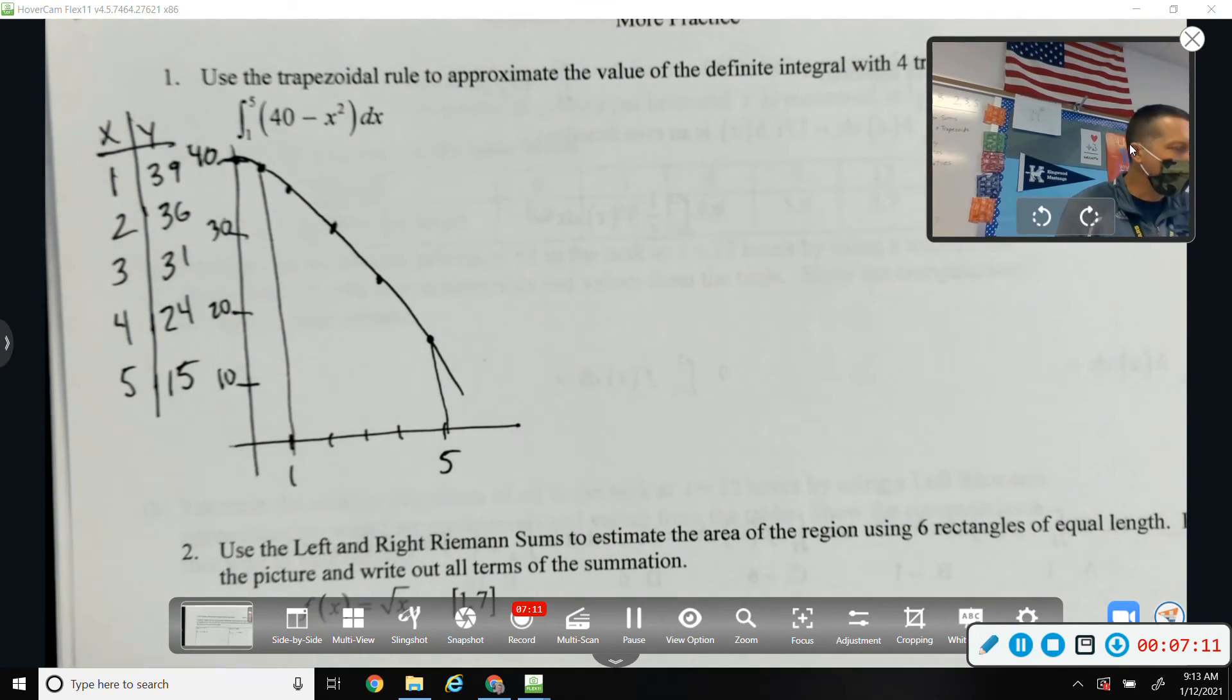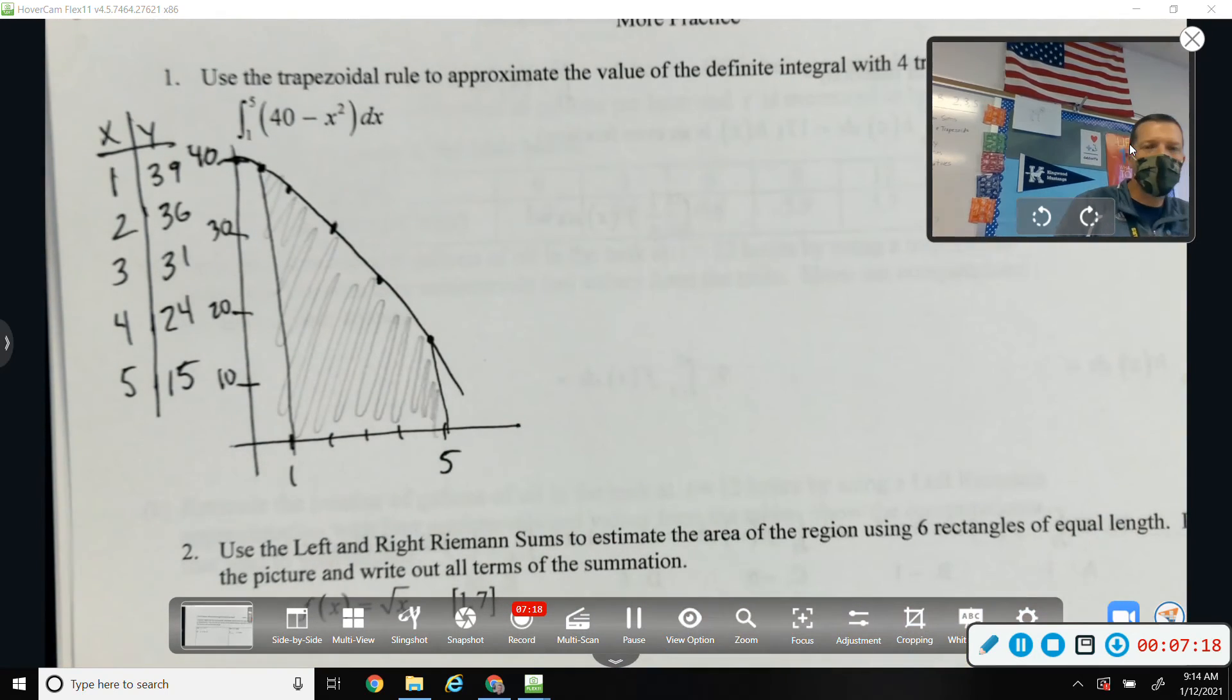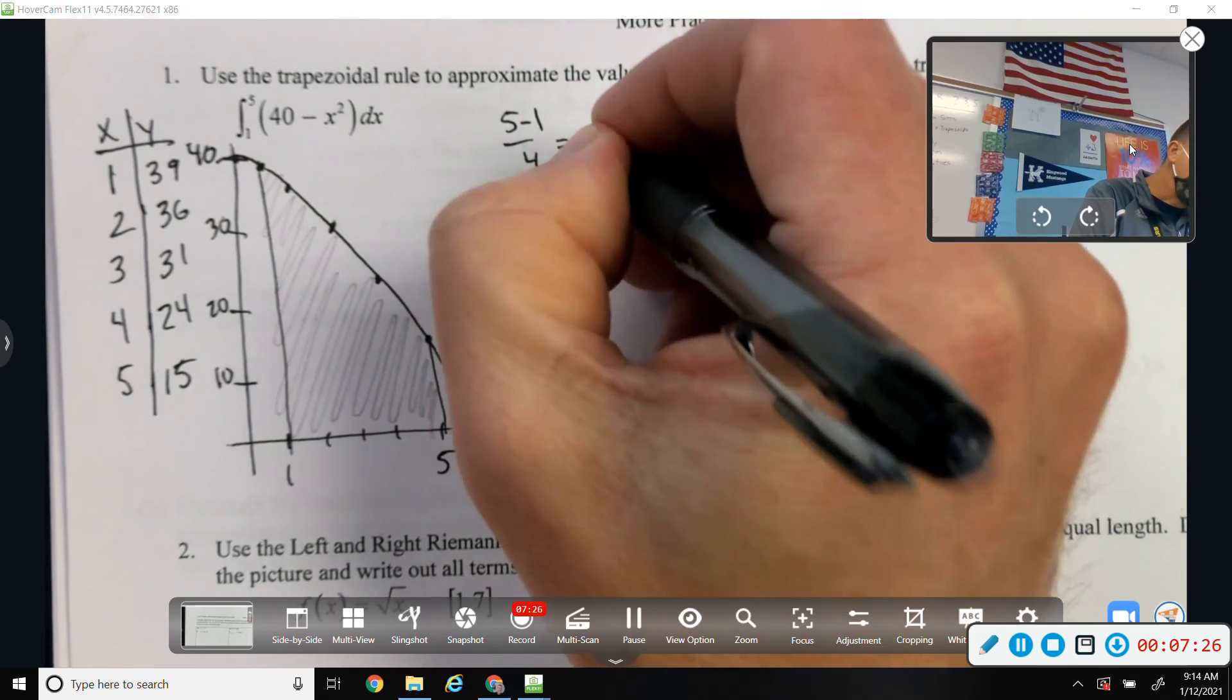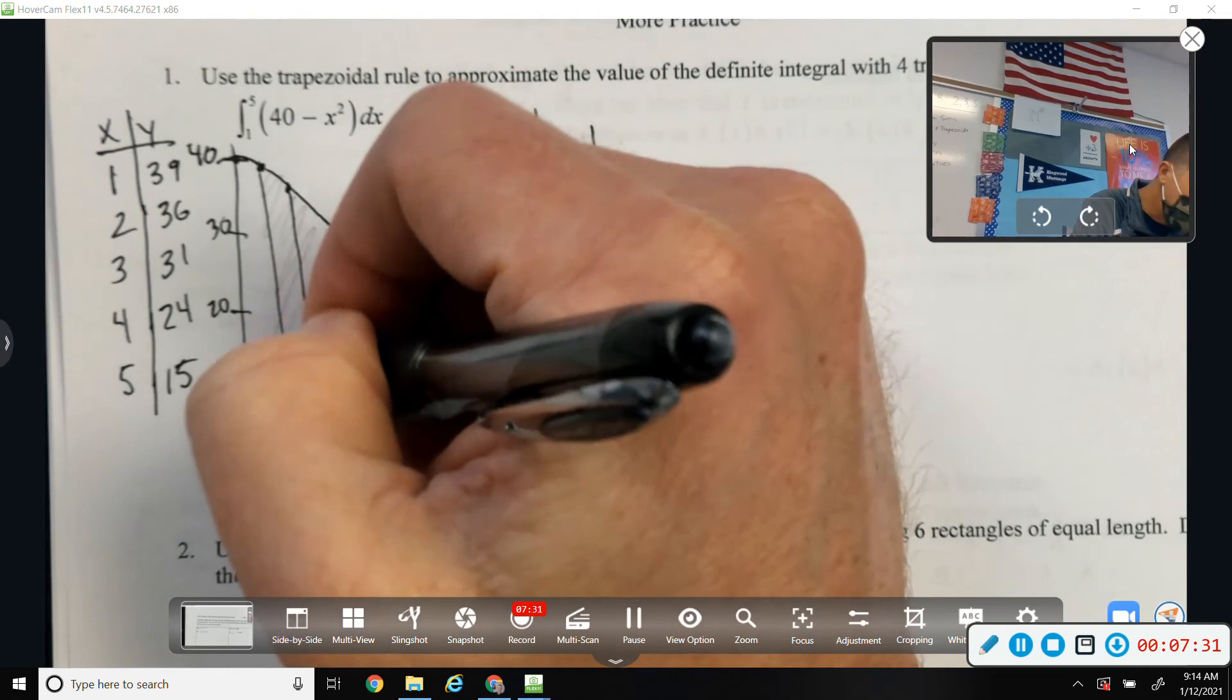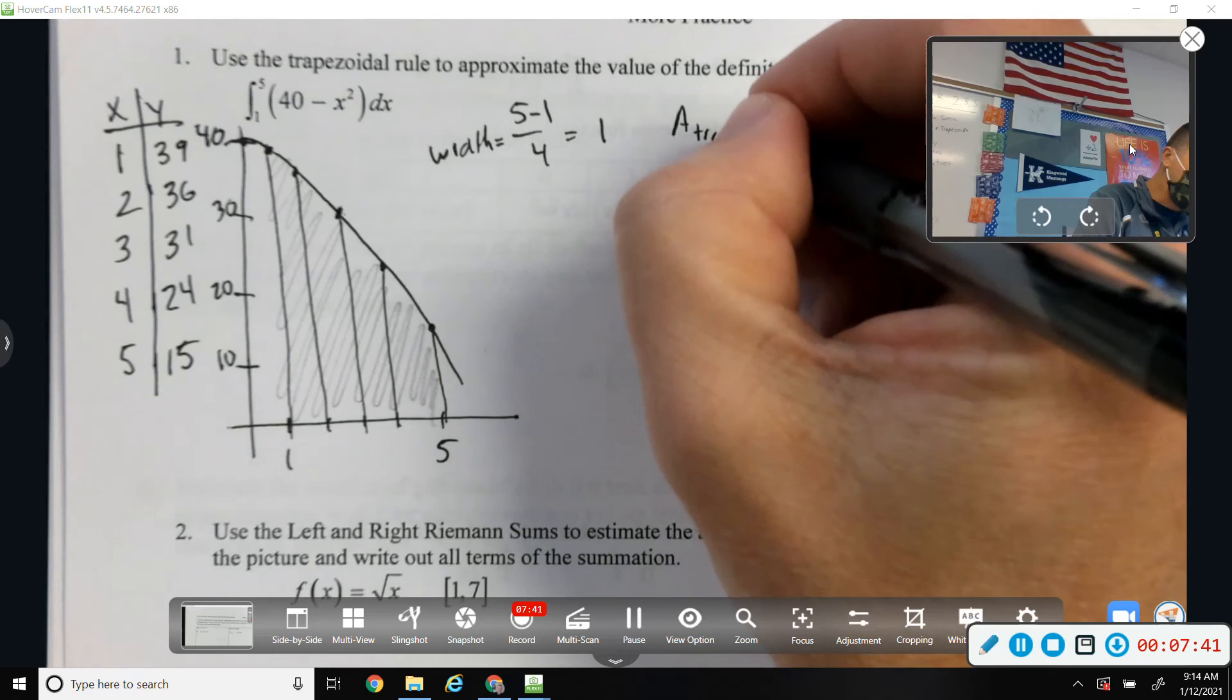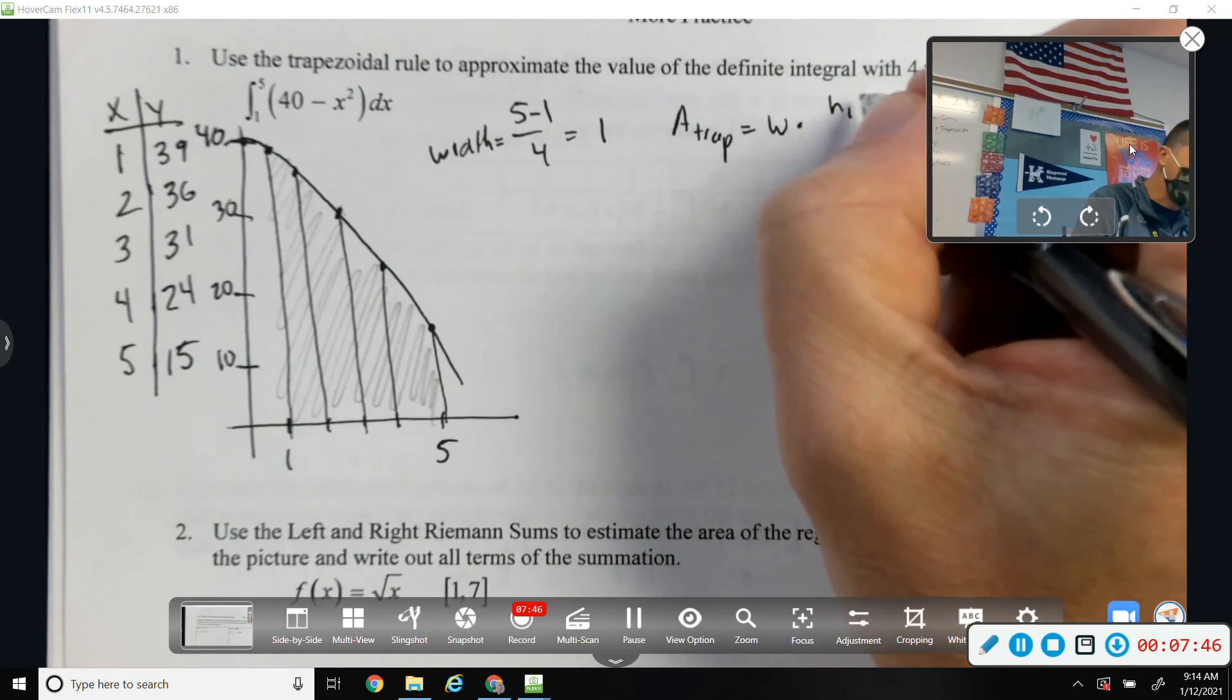And we want that area using a trapezoid. Using 4 trapezoids, which is nice, because that divides it up nice and even. So, our width is 1. Let's see. Kind of out to the side. Reminding myself that the trapezoid is width times the average of the two heights.